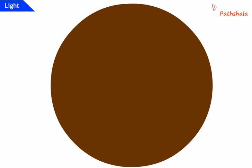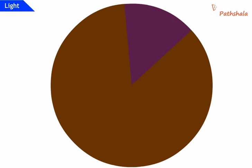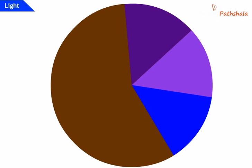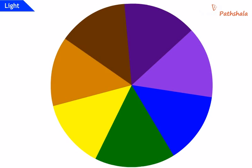Now let us perform another activity. Take a circular cardboard disc of about 10 cm diameter. Divide this disc into seven segments. Paint the seven rainbow colors on these segments. Make a small hole at the center of the disc. Fix the disc loosely on the tip of a refill of a ball pen. Rotate the disc in the daylight.